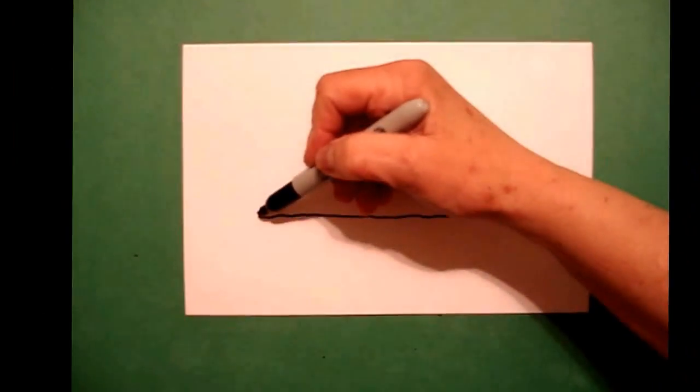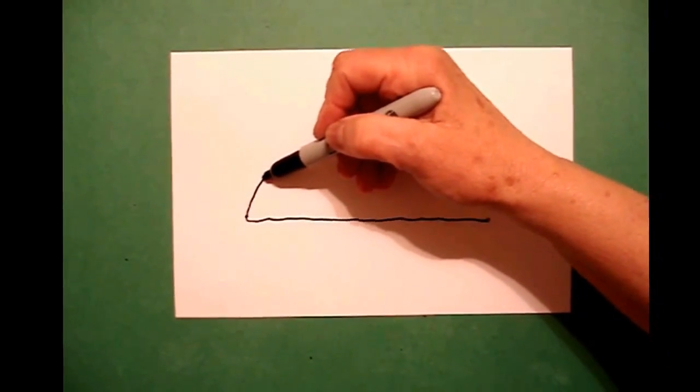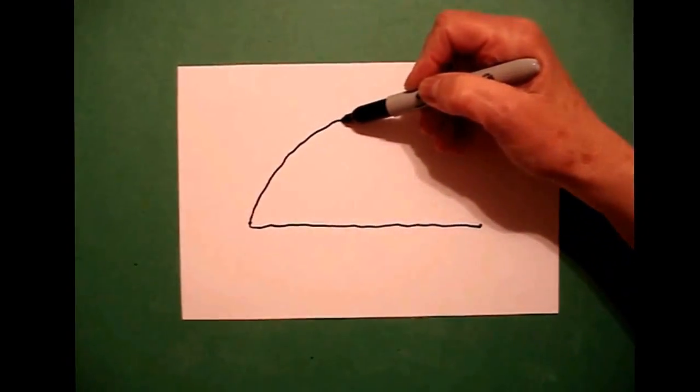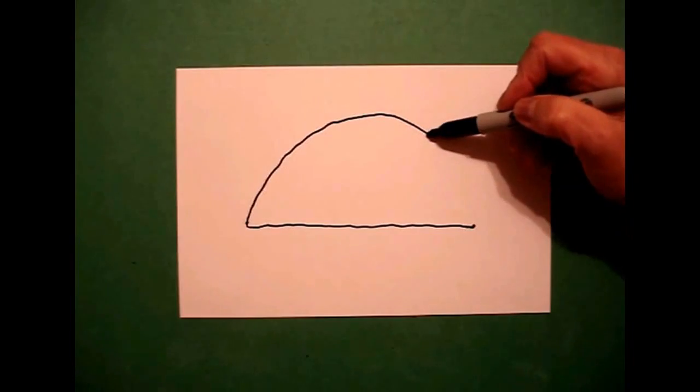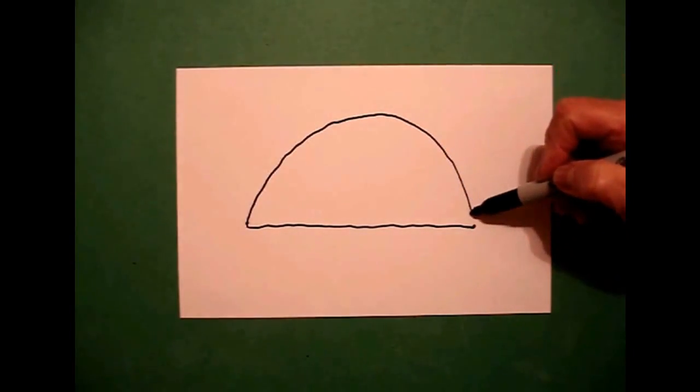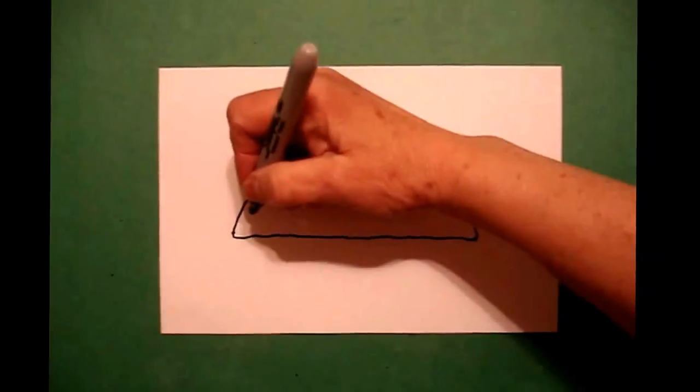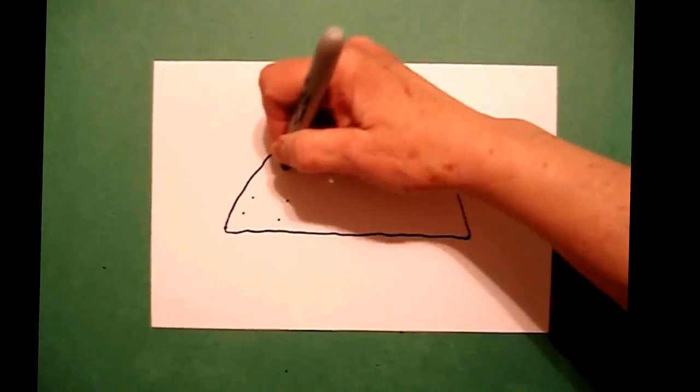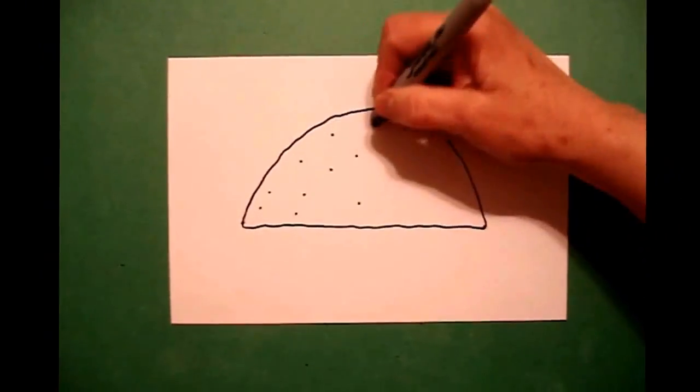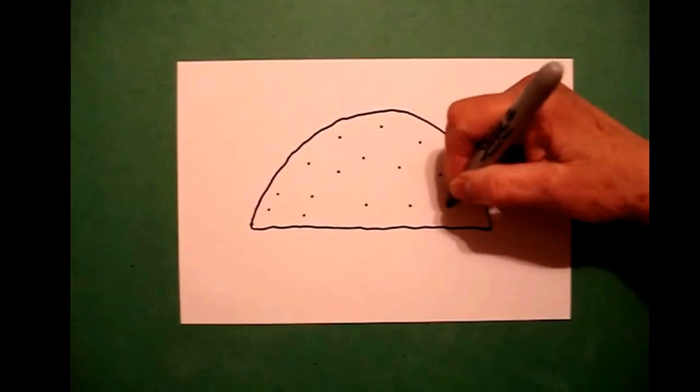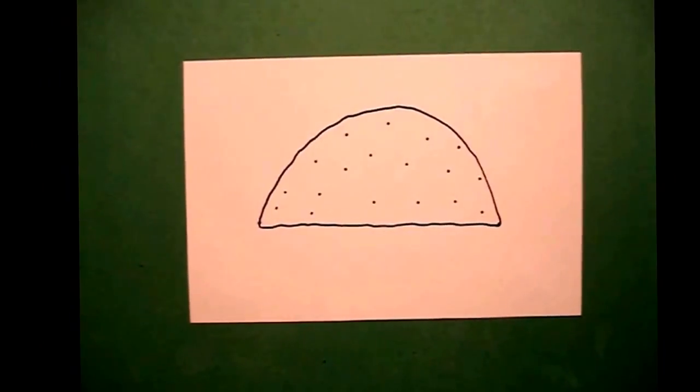I come back to the left and I draw a big curved line. Keep going, keep going, all the way across and connect. Now I'm going to add some dots across this shape. Not too many.